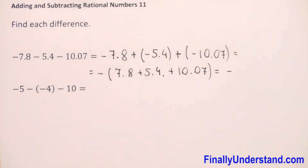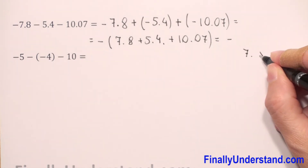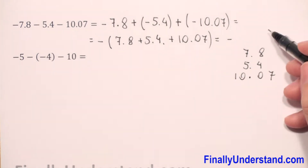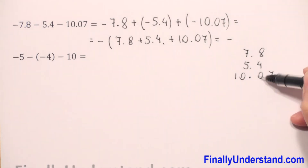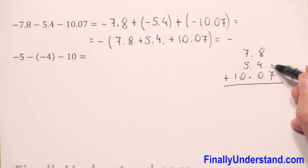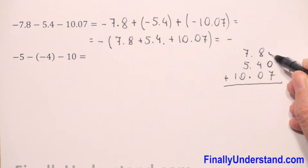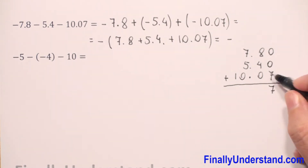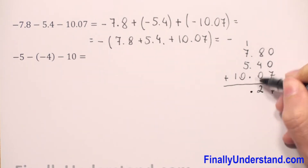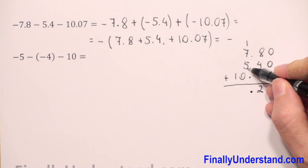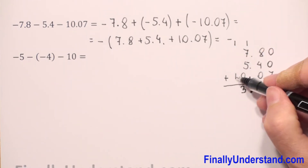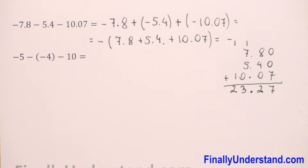We copy the negative sign and add the three numbers: 7.8, 5.4, and 10.07. We keep hundredths in the same column, tens in the same column — line up the decimal points. Empty spaces we can replace with zero. Zero plus seven is seven; eight plus four is 12, write two carry one; one plus seven is eight plus five is 13 plus zero is 13, write three carry one; one plus one is two.